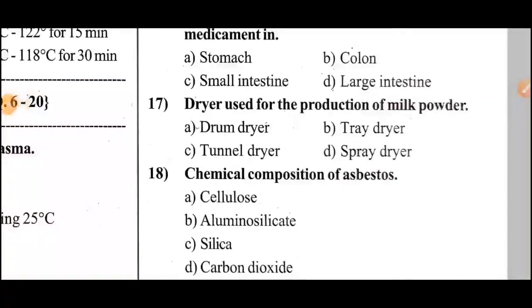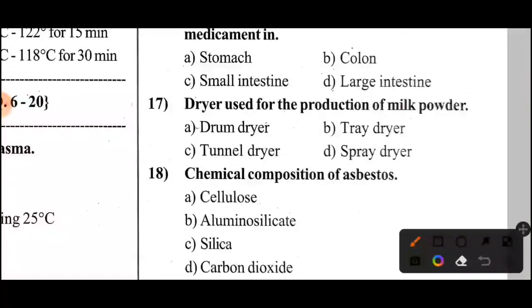Next question: Which dryer is used for the production of milk powder? Options A, B, C, D. The answer is Option D — spray dryer.